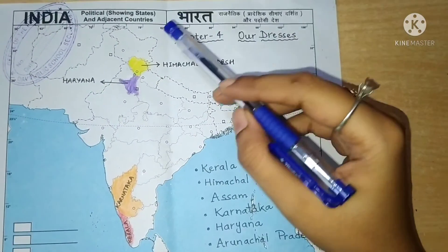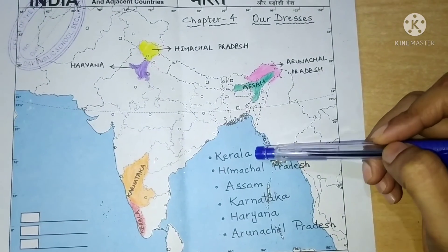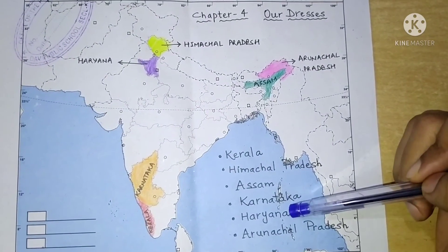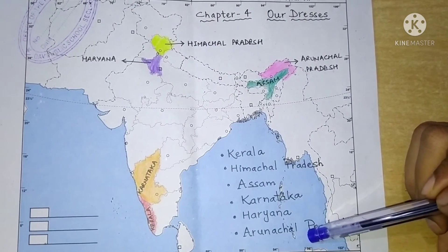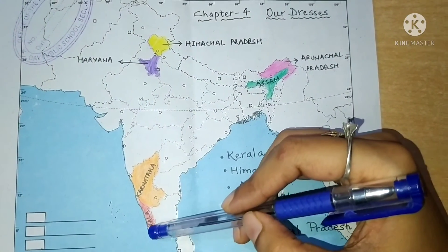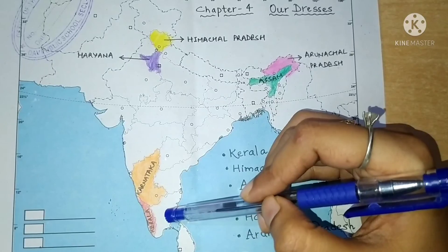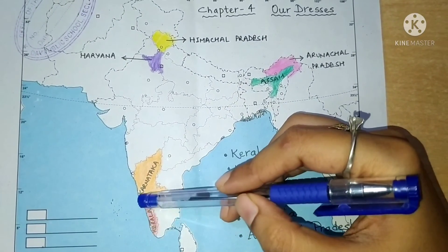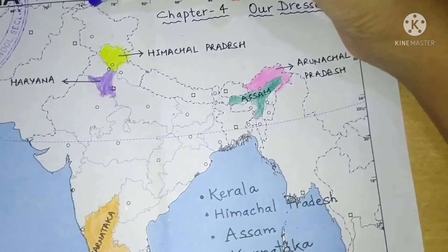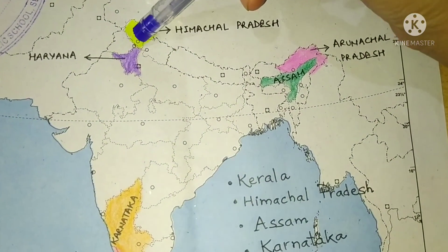Now chapter number 4 is 'Our Dresses.' The places we have to mark here are: Kerala, Himachal Pradesh, Assam, Karnataka, Haryana, and Arunachal Pradesh. The southernmost state along with Tamil Nadu is Kerala — India's southernmost states are Tamil Nadu and Kerala, so we will mark Kerala here. Below Jammu and Kashmir we have Himachal Pradesh — it comes just below Jammu and Kashmir.